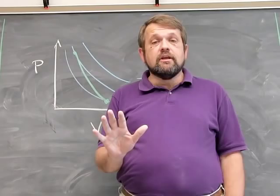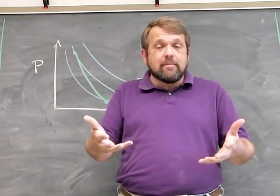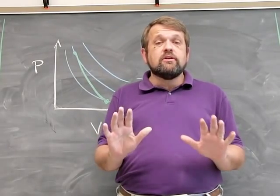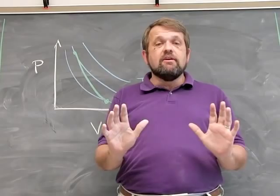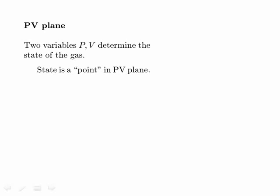We're very interested in keeping track of changes in the macroscopic state of an ideal gas. One way is to visualize transformations using the PV plane — a two-dimensional space where P is on the vertical axis and V is on the horizontal axis. Each state of the gas is just a point in this plane. If you know P and V, you can calculate the temperature and everything important about the state of the gas.